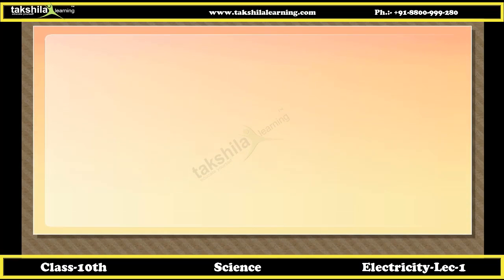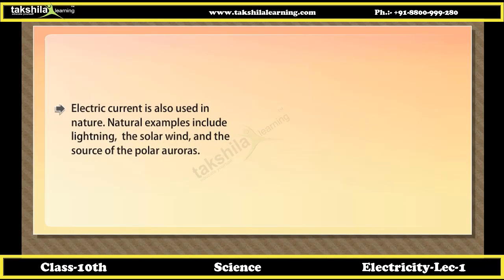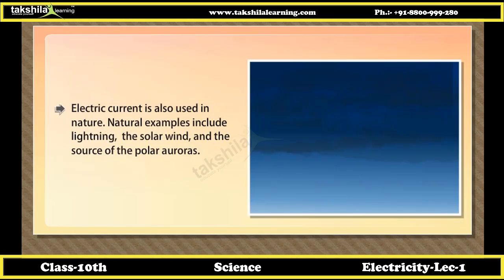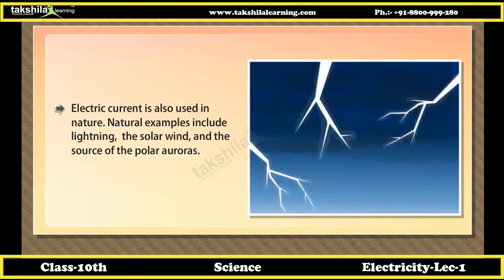Did you know? Electric current is also used in nature. Natural examples include lightning, the solar wind, and the sources of the polar auroras.